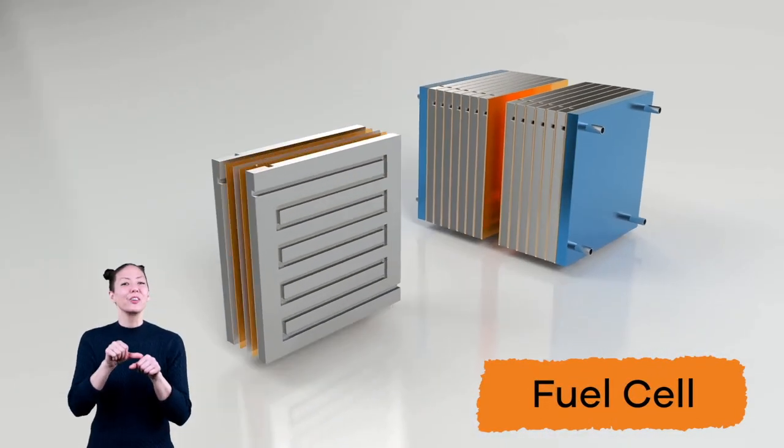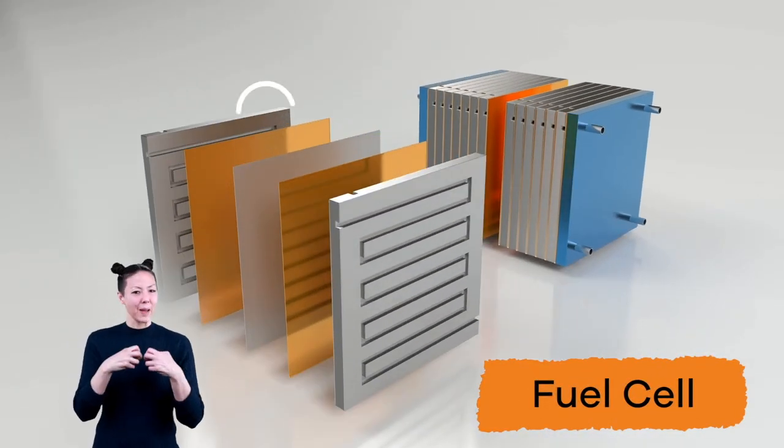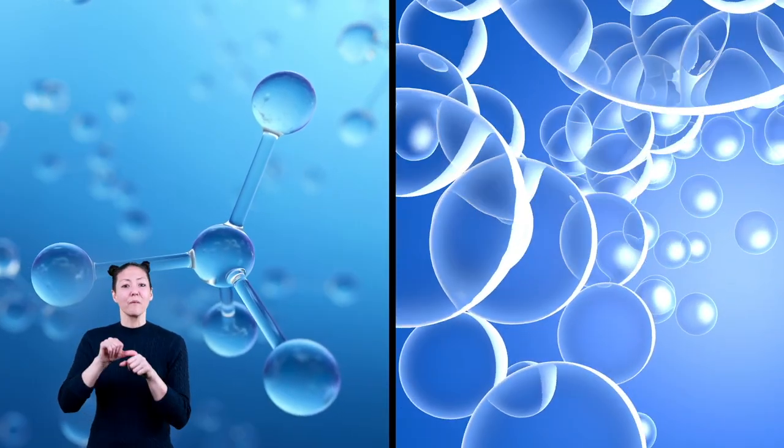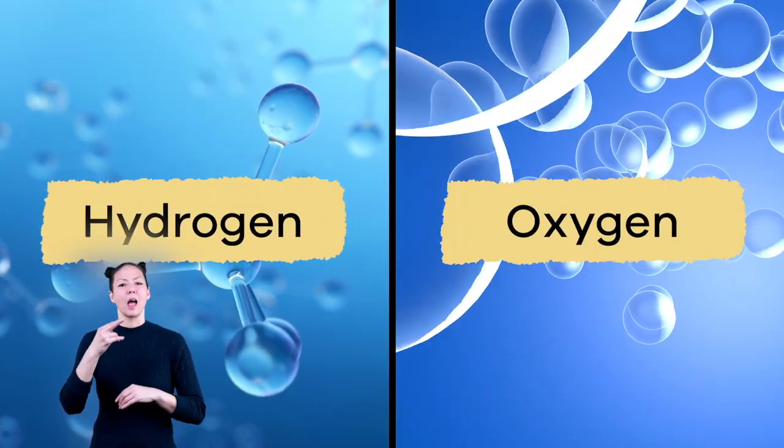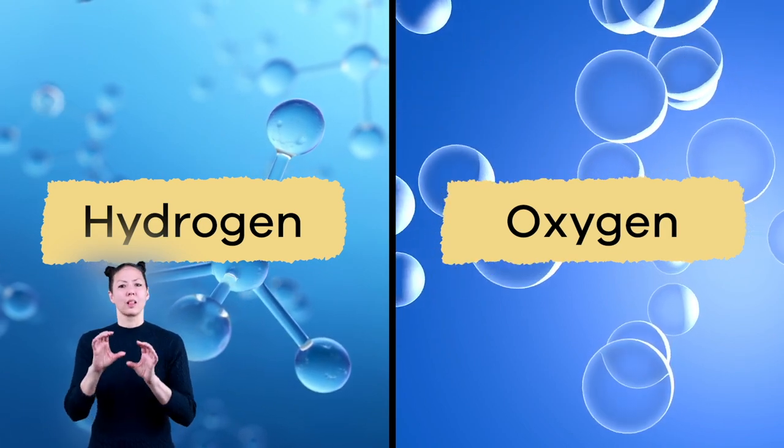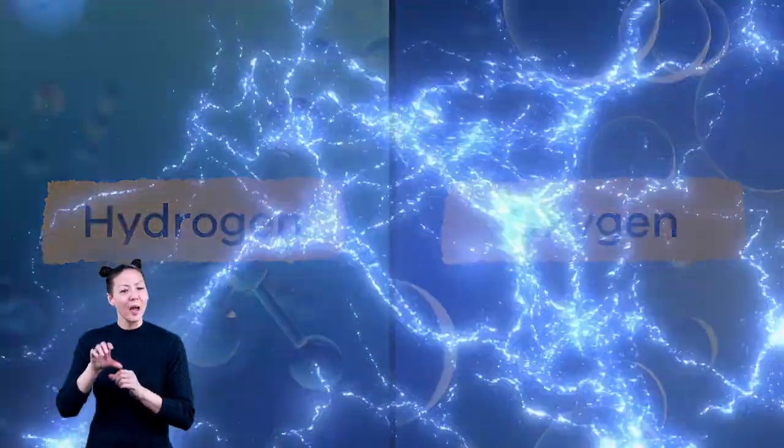Fuel cells also work like batteries, except they don't need to be recharged. Fuel cells take chemicals like hydrogen and oxygen and put them together. When the two chemicals react to each other, or have a chemical reaction, electricity is created.